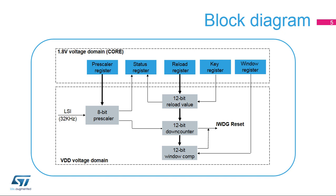When the IWDG is started, the 12-bit counter starts counting down from the reset value of 0xFFF. To refresh the IWDG counter, the key value 0xAAA must be written in the key register to reload the counter value. If the down-counter reaches the end of the count value, 0x000, a system reset is generated.